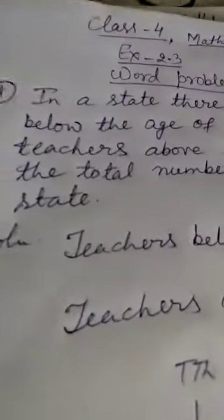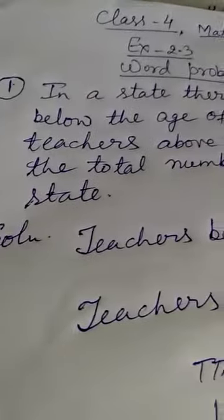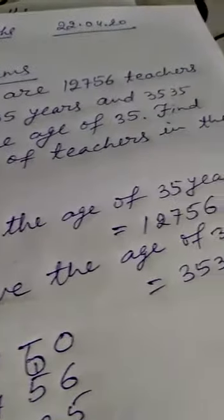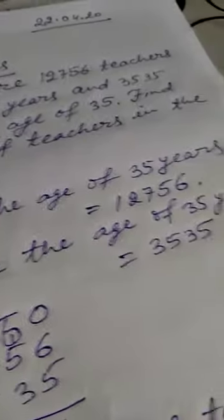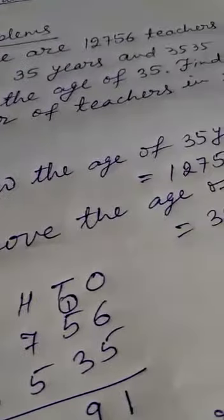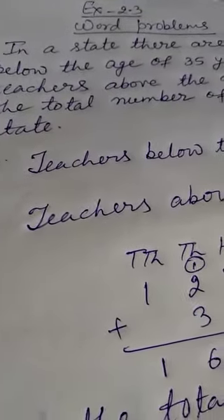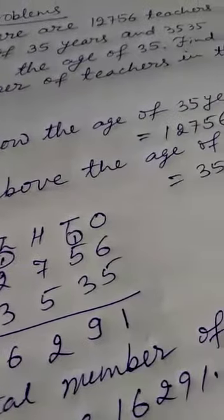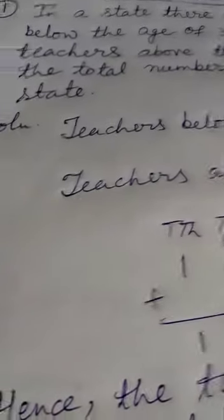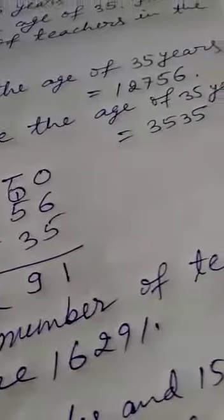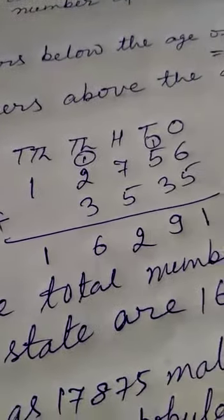So the first question: in a state there are 12,756 teachers below the age of 35 years and 3,535 teachers above the age of 35. Find the total number of teachers in the state. So first of all, you will write the language: teachers below the age of 35 years is equal to 12,756, and teachers above the age of 35 years is 3,535. Now you will arrange these into columns according to place.